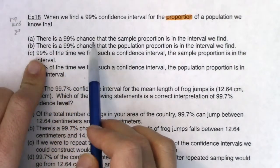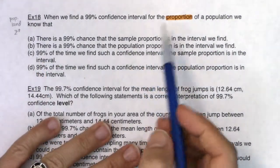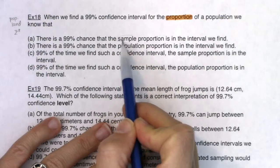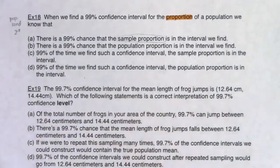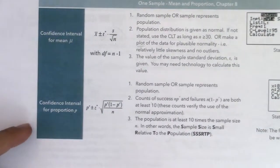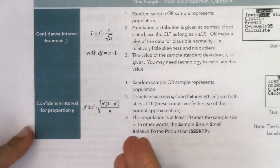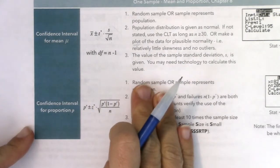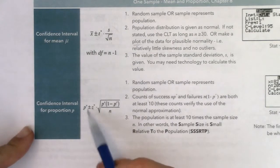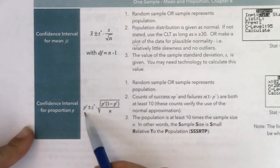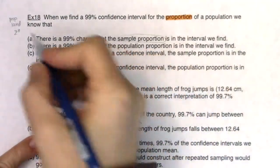When we find a 99% confidence interval for the proportion of a population, we know that there is a 99% chance that the sample proportion is in the interval we find. Well, there's a whole bunch wrong with that sentence. The first thing is: your sample proportion is always in your interval — that's how you construct your interval. Going back to the original formula, the sample proportion is always in the middle of the interval.